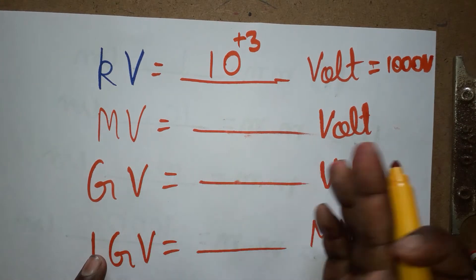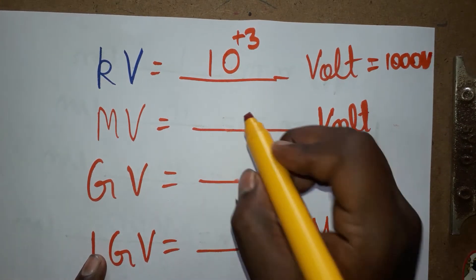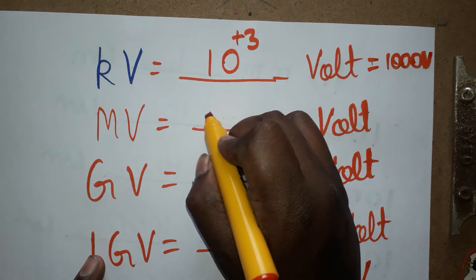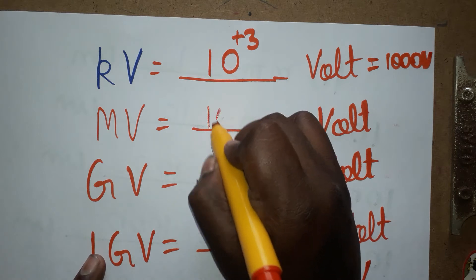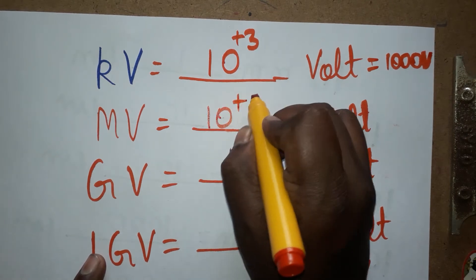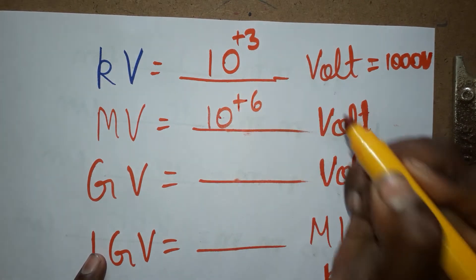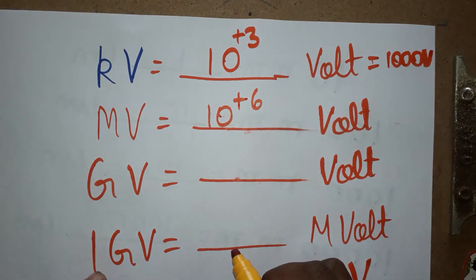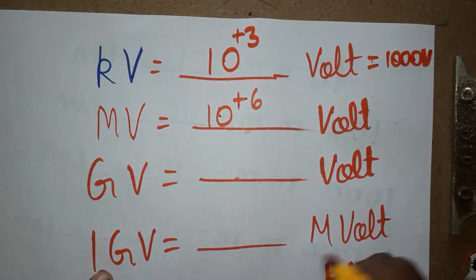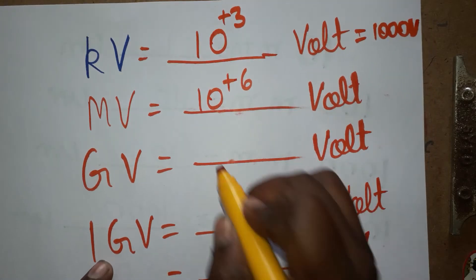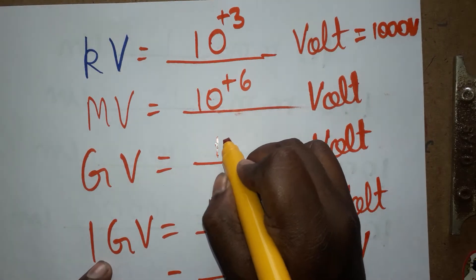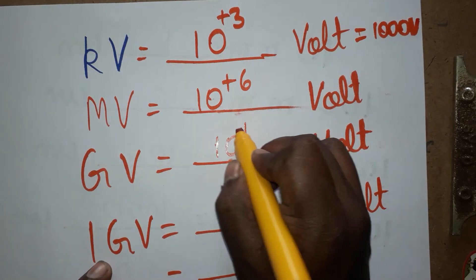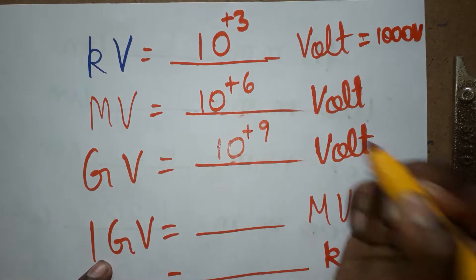MV to V: MV is 10 power plus 6 V. GV to V: it is 10 power plus 9 V.